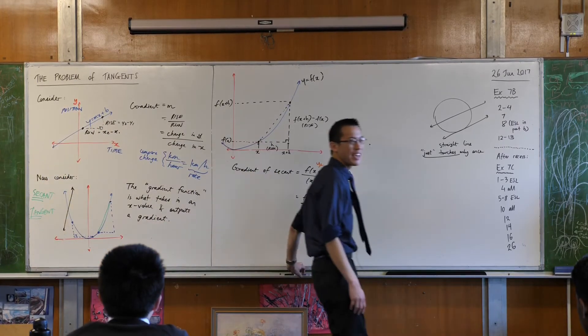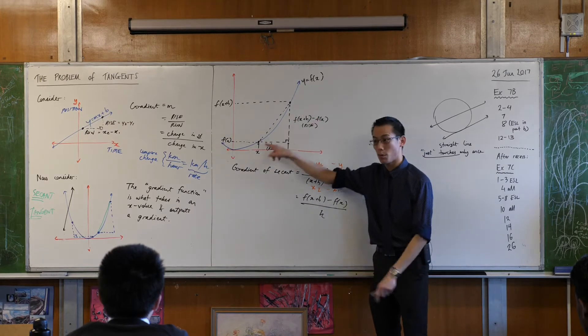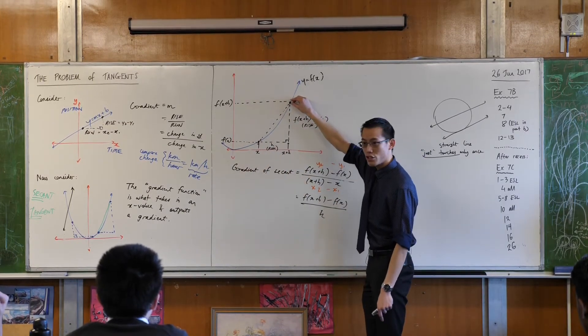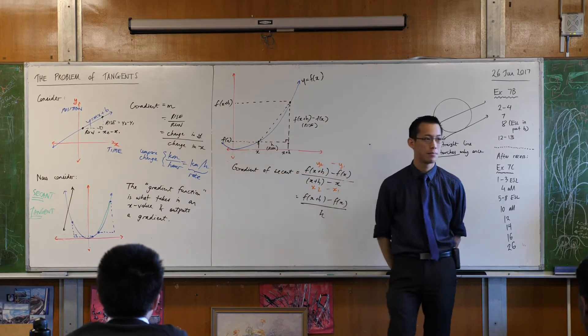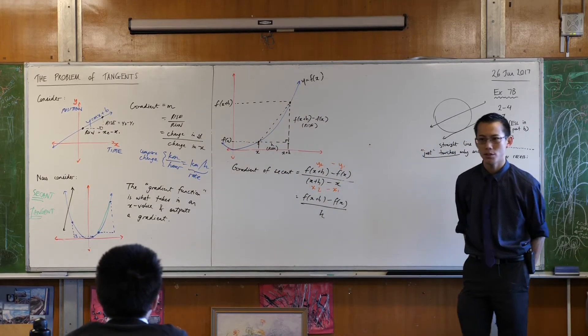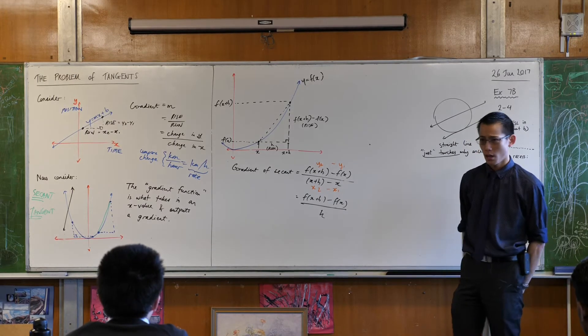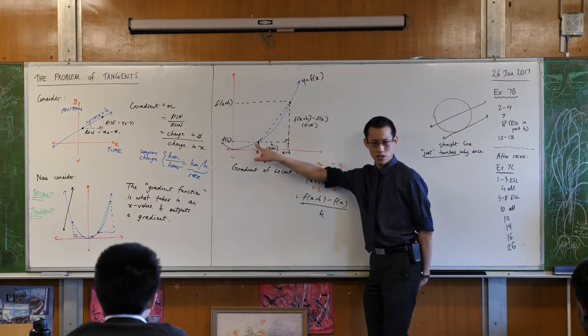Think about this. If you took these two points and you put them smack bang on top of each other, right, you grabbed him and you moved him along. What would happen to the run? What would happen to the run? The run would approach zero, would it not? Like these guys are going to get closer and closer together.